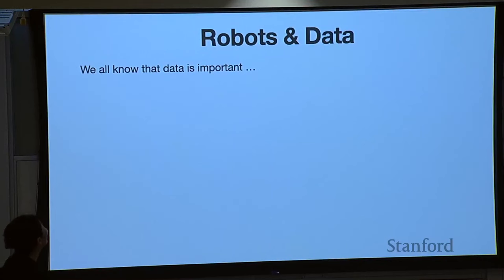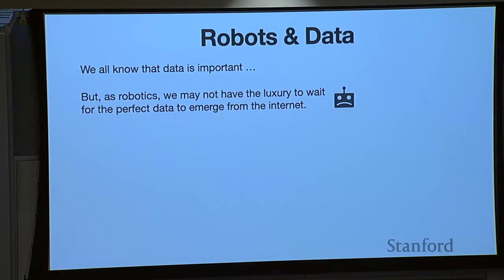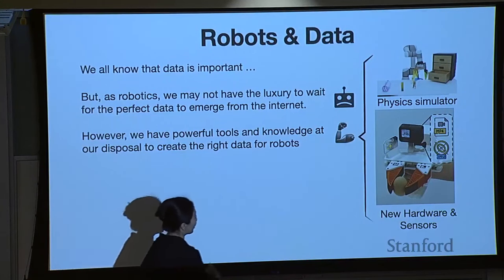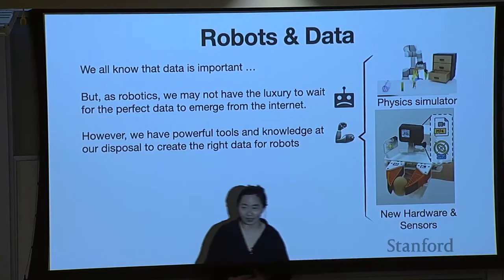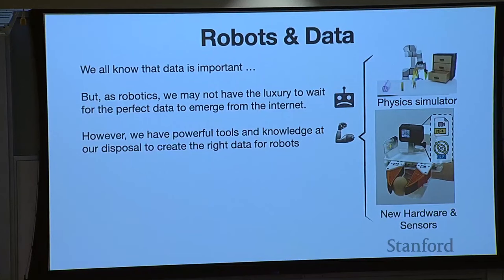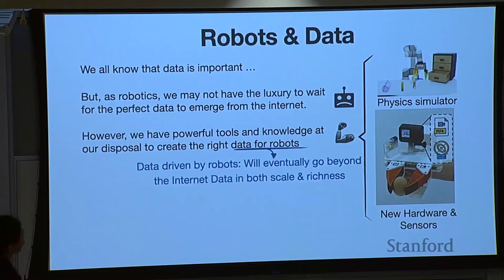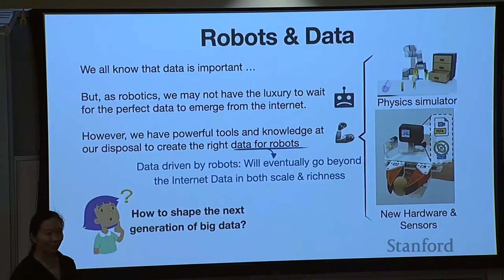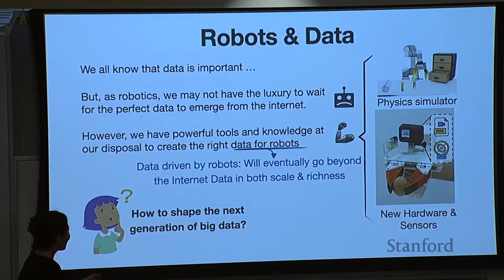As roboticists, we do have a lot of powerful tools and knowledge at our disposal to create the right data for robot learning — for example, high-quality physics simulators, or we can design new hardware or sensors to help scale up data collection for robots. Those tools and knowledge are something that most ML researchers don't have — that's our advantage. I really believe that data well-driven by physical robots in the physical world will eventually go beyond the internet data we have today in terms of both scale and richness. What I really hope for in today's talk is to encourage you, as current and future roboticists, to really think about how you can make use of your unique skill sets and knowledge to help shape the next generation of big data. There is a lot of exciting work in the community approaching this data problem from many different directions — like ALOHA, a very nice framework for reducing the cost of data collection for very dexterous manipulation tasks, and the OpenX embodiment dataset. I highly recommend you check those out.